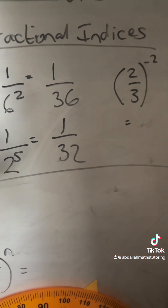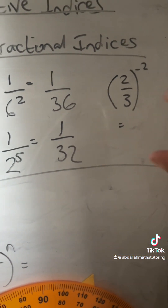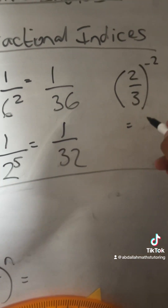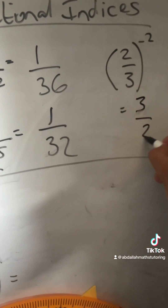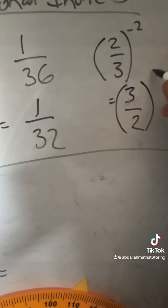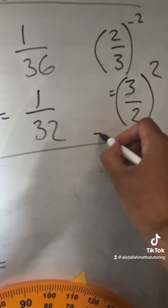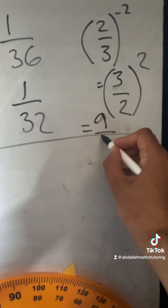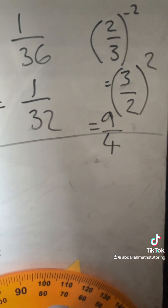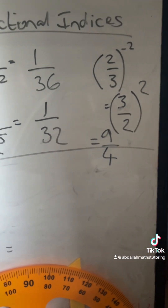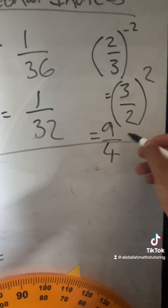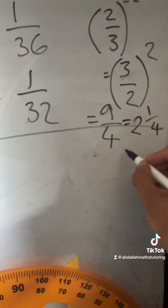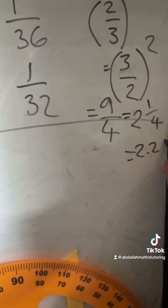This next one: 2 thirds to the minus 2. Again, I'm going to do the reciprocal, so I'm going to invert it — so it becomes 3 halves squared. That will be 3 squared, which is 9, and 2 squared, which is 4. So I'll leave it as the fraction 9 over 4, but you can write it as 2 and a quarter or 2.25.